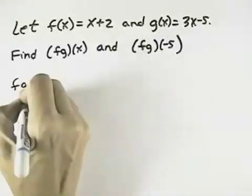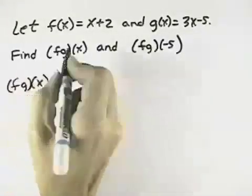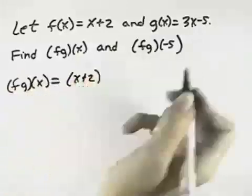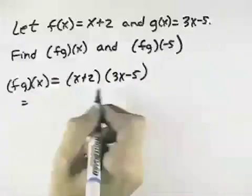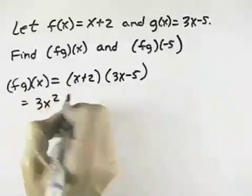So f times g of x means take your function f and multiply it by your function g. When we do that, x times 3x is 3x squared.